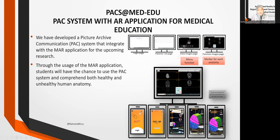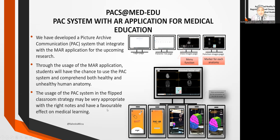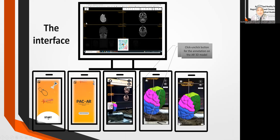Through the use of the mobile augmented reality applications, students have the chance to use the PAC system and comprehend both healthy and unhealthy human anatomy. The use of the PAC system in the flipped classroom strategy may be very appropriate and have a favorable effect on medical learning. This is the interface — all the standard PAC system functions are available: measurement, movement, and whatever is in a normal PAC system, plus added functions for users to upload content or use markers.